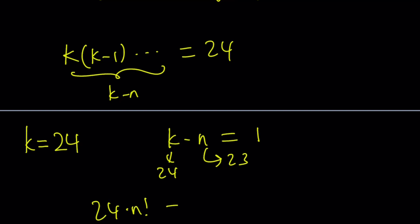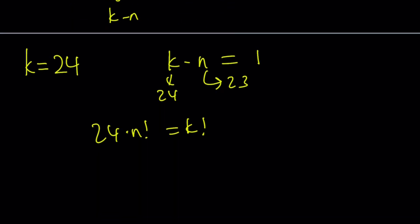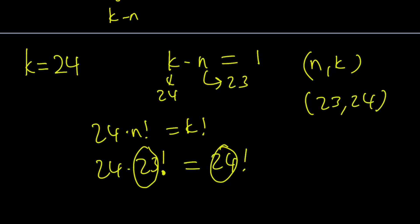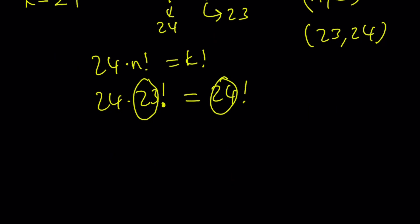24 times n factorial is k factorial. If n is 23, then you get 24 times 23 factorial. And for the reasons we mentioned before, this is the same as 24 factorial. So n equals 23 and k equals 24 is a solution. If I want to write it as an ordered pair, I could write 23 comma 24. Great. So let's find the other solutions.